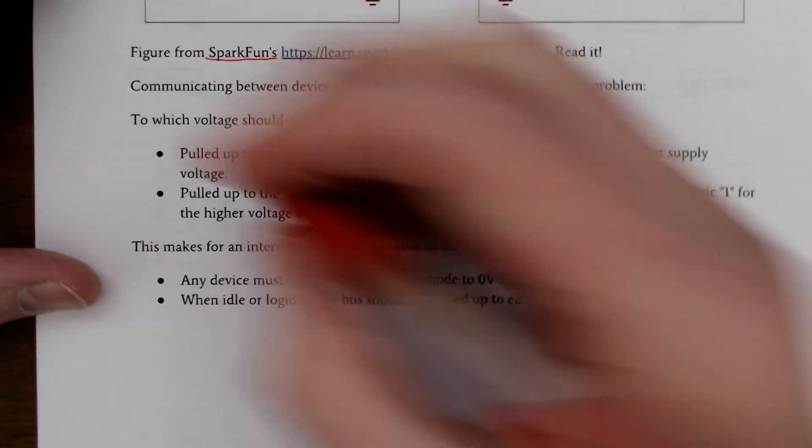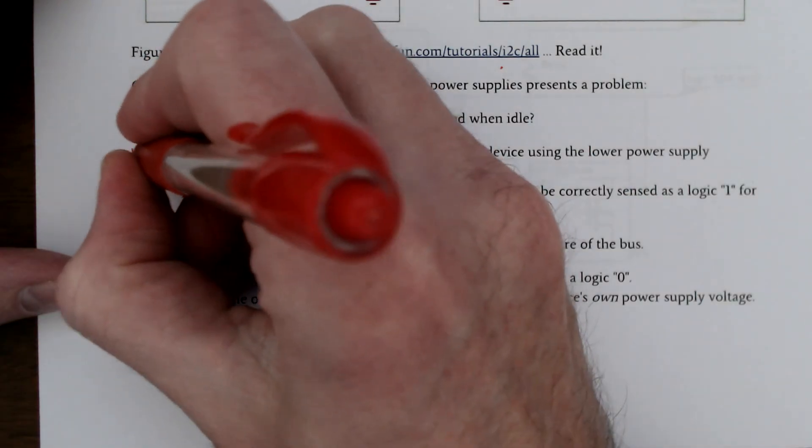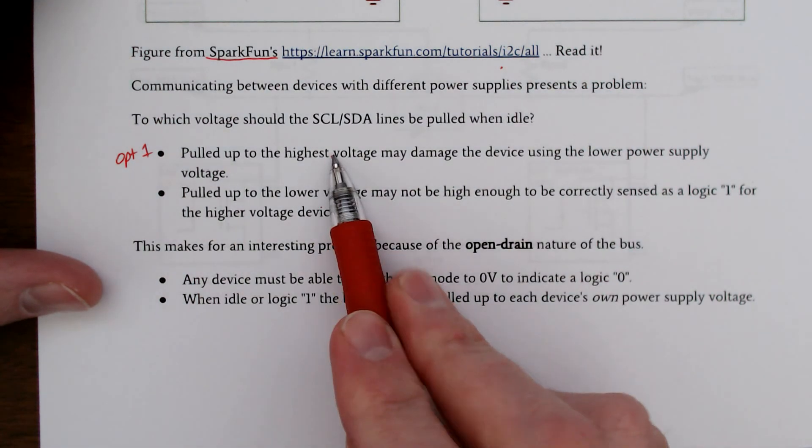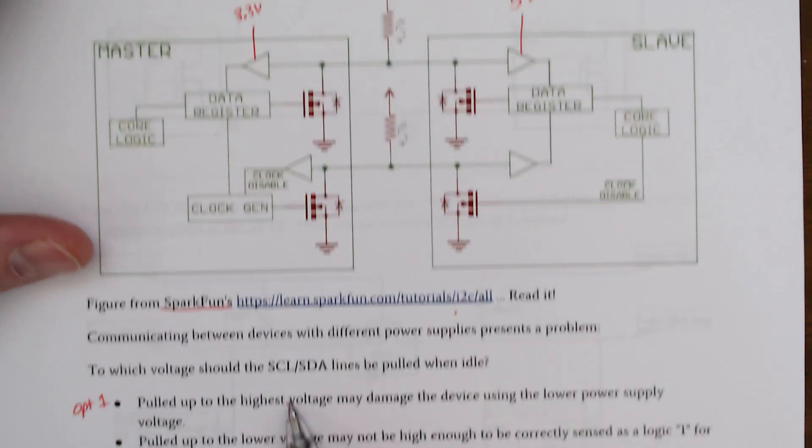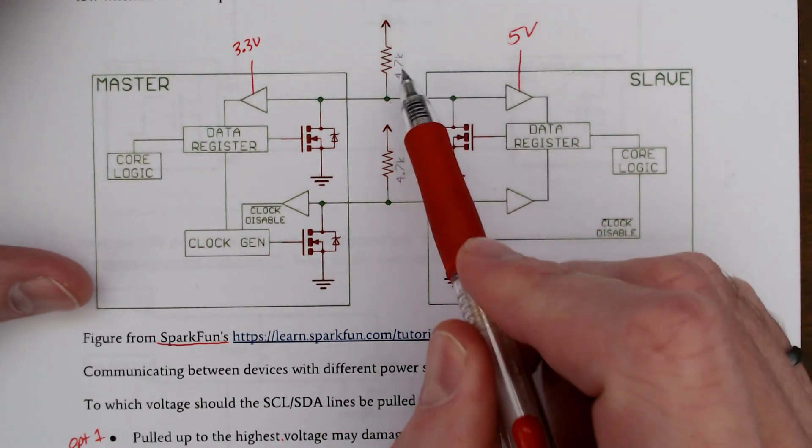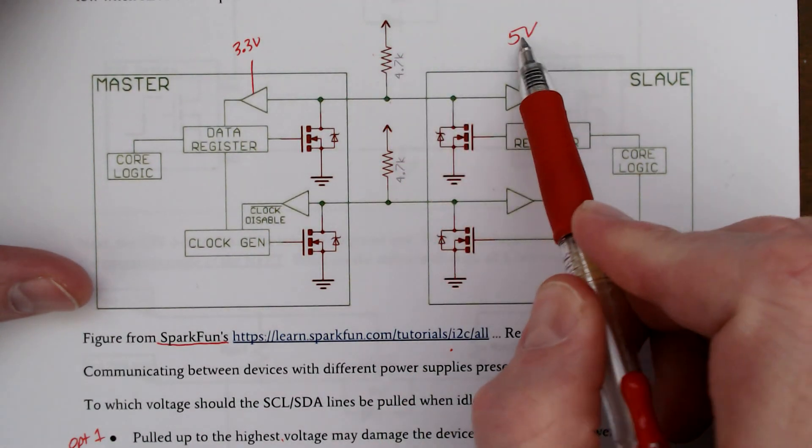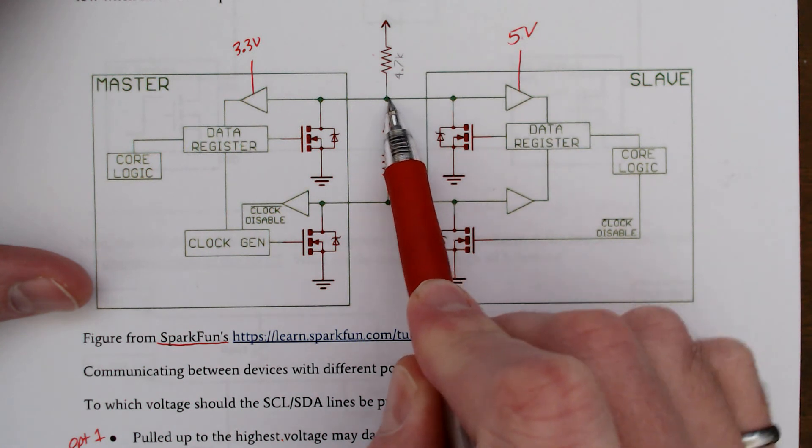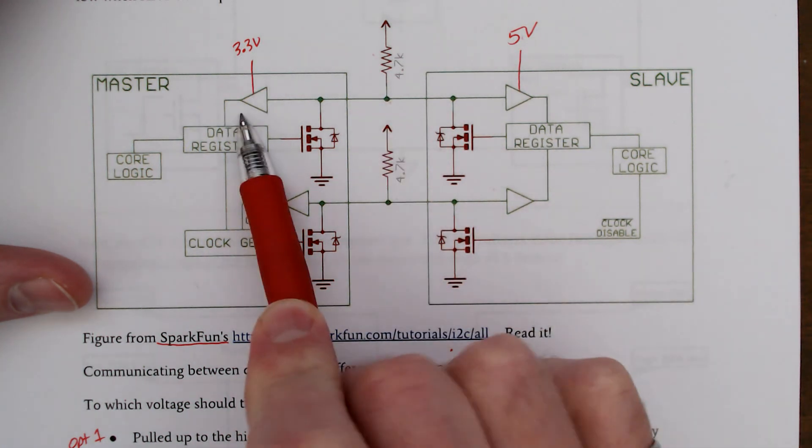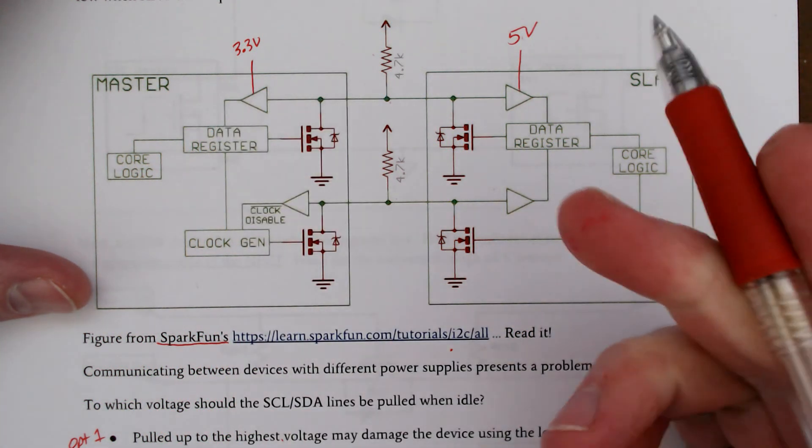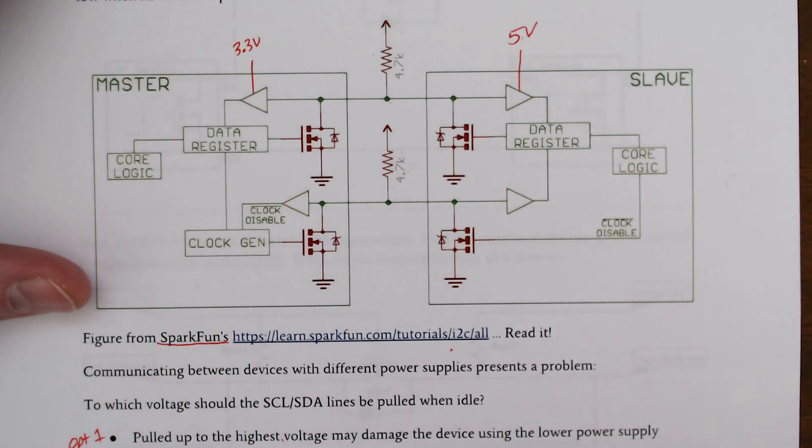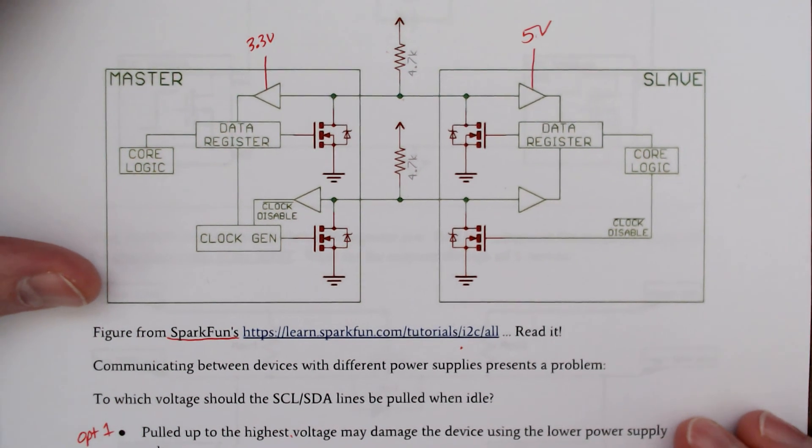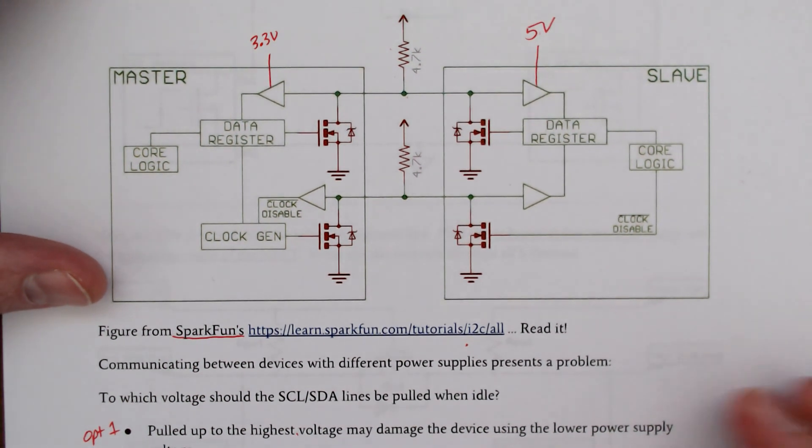Well we've got two options. Option number one, pull it up to the highest voltage, and that may damage the device if we pull this line up to 5 volts. Now we have 5 volts applied to this node, applied to a 3.3 volt powered device, and that may cause some damage. Some devices are meant to handle that, but in general that's a bad idea unless it's explicitly called out in the datasheet.